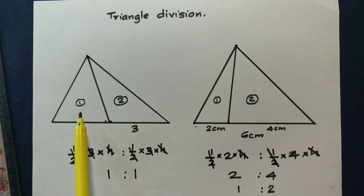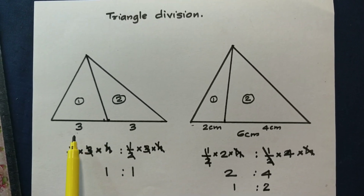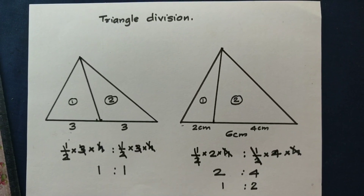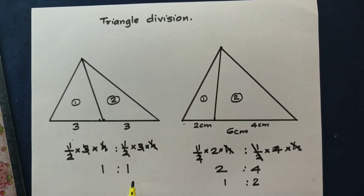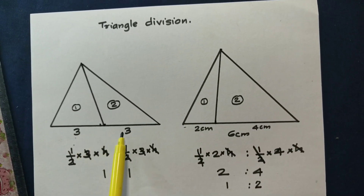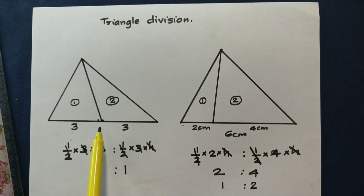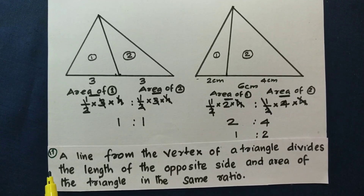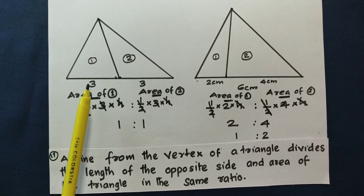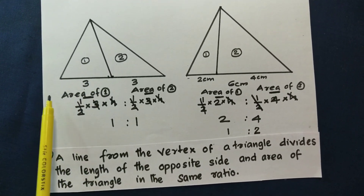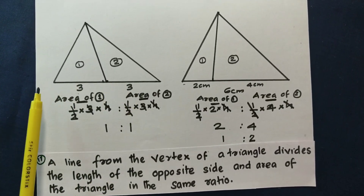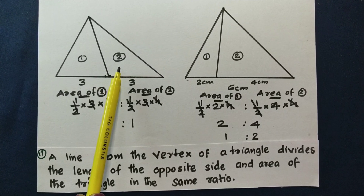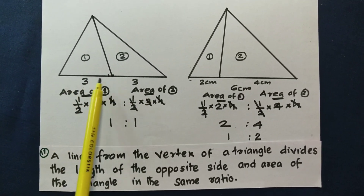The area ratio of the triangles is equal to the ratio of their bases. You can simplify: two is to four, or one is to two; three is to three simplifies to one is to one. The area ratio is equal to the base ratio — that is the key point.